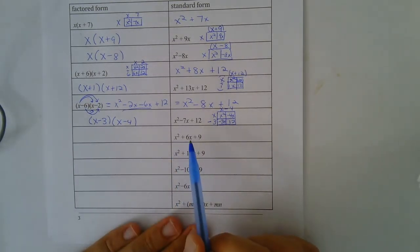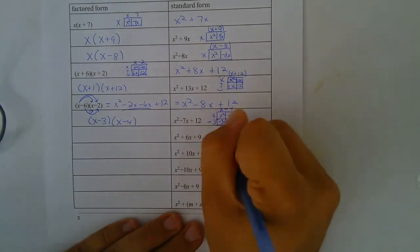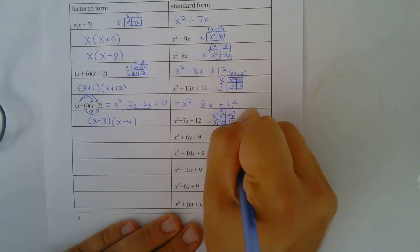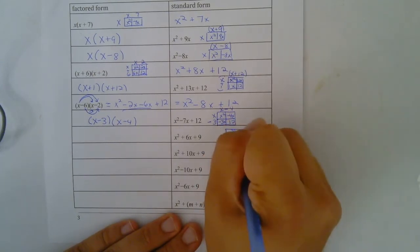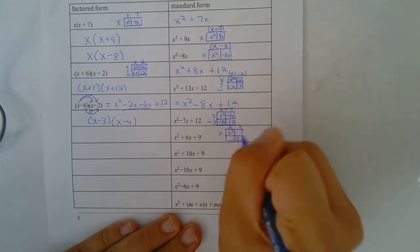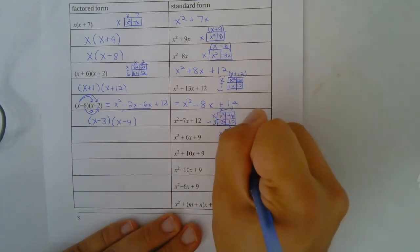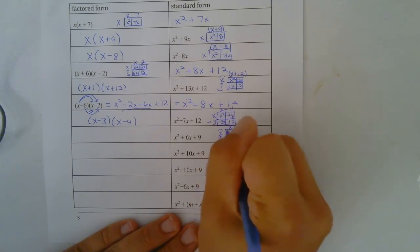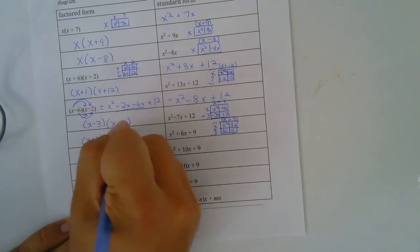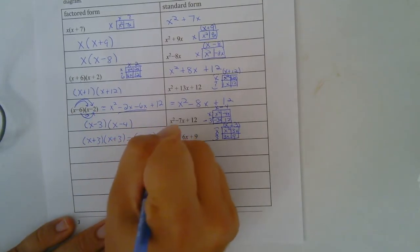Now we have x squared plus 6x plus 9. Here we have x squared and then 9, so that would be x and x. Then this would be 3 and 3, giving 3x and another 3x. So that would be x plus 3 and another x plus 3 — meaning x plus 3 times x plus 3. A lot of times when that's repeated twice, people will just write x plus 3 squared.